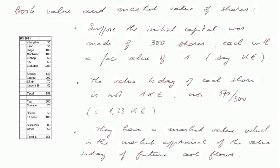Book value and market value of shares. So here is a balance sheet and we see the equity. Suppose that the initial capital, here 300, was made of 300 shares, each with a face value of 1. Say the units is thousands of euros. So this is 300,000 euros.